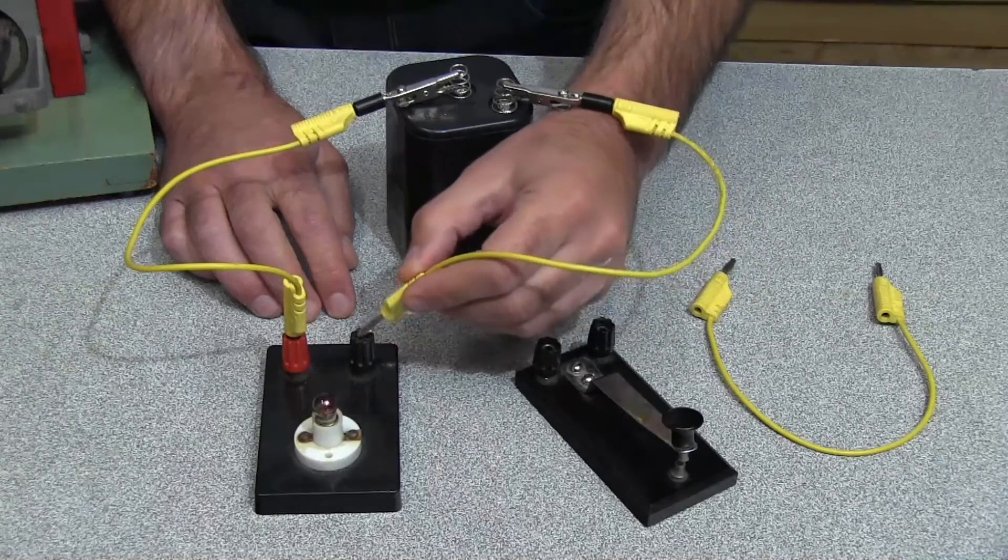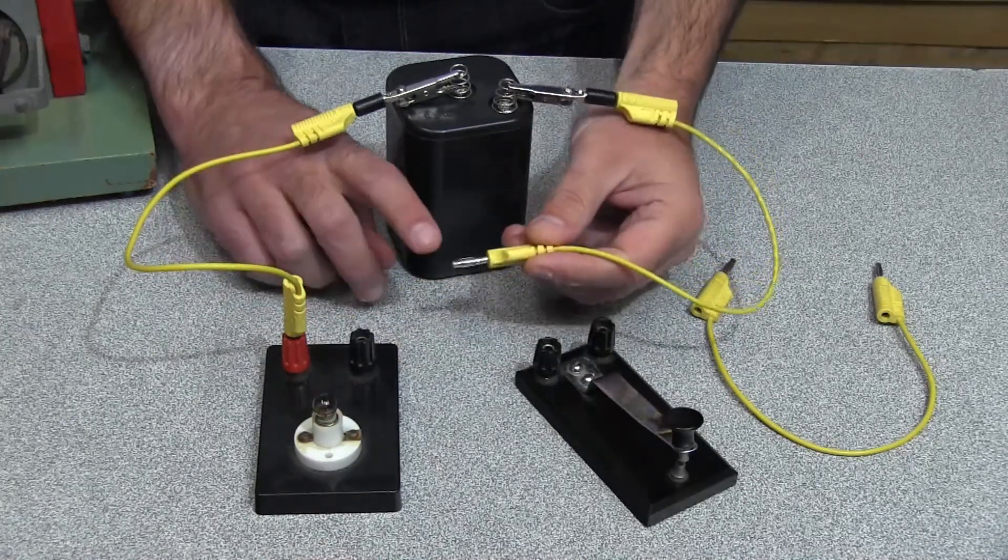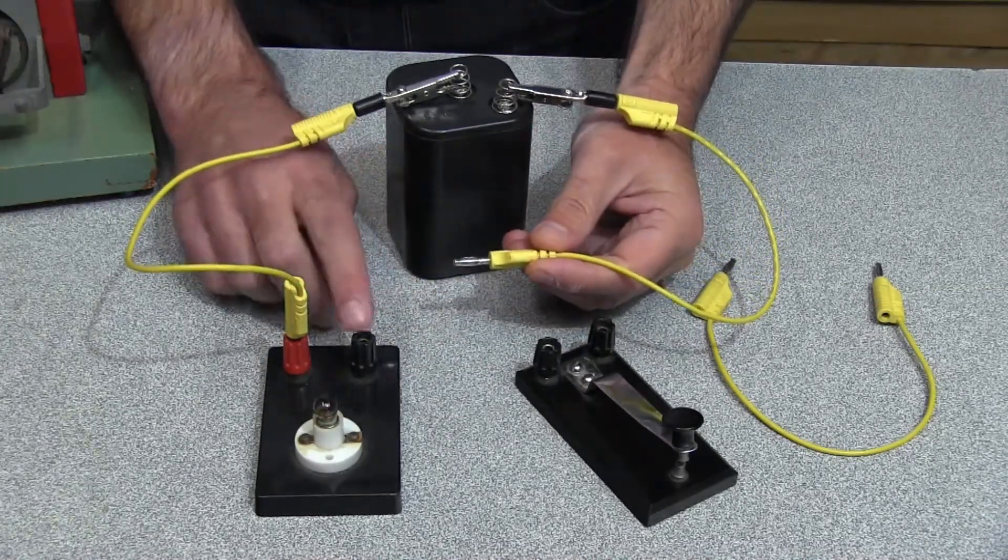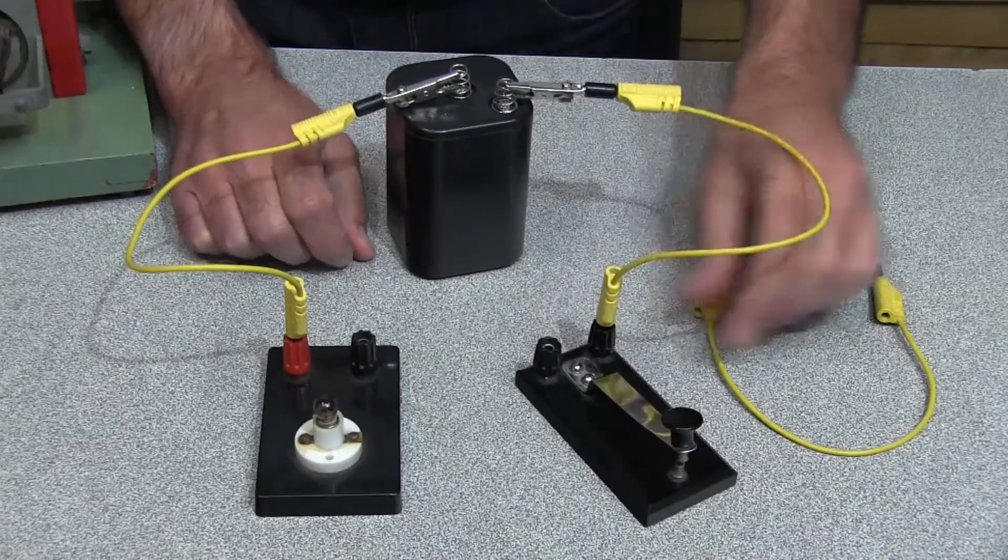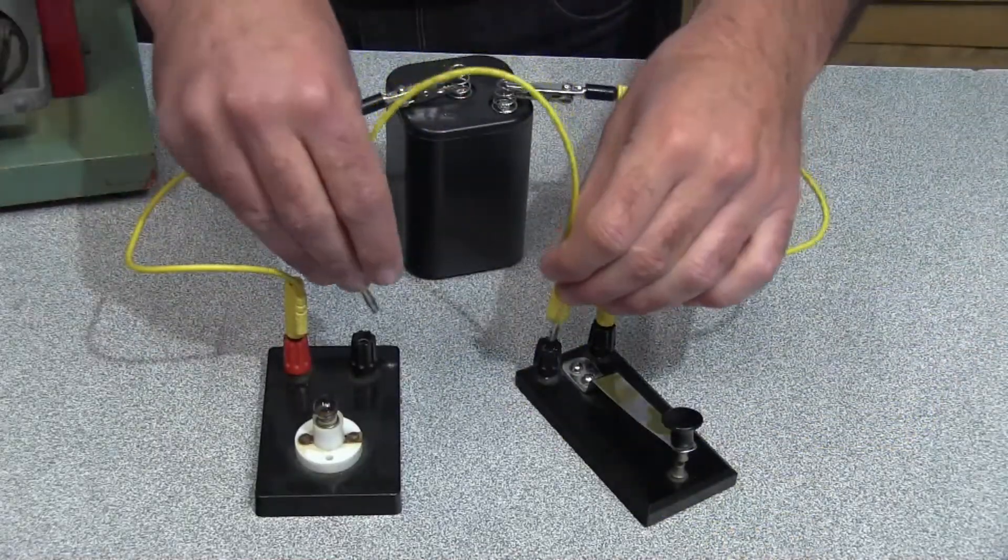For the electric circuit to be complete, the electric current has to be allowed to flow from here to here. So I can place a switch between these two points. I'll need another wire.